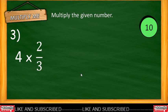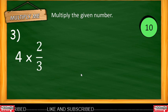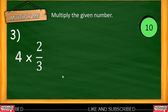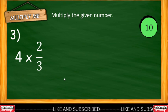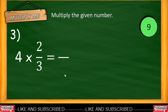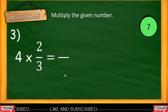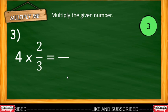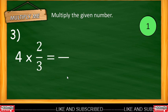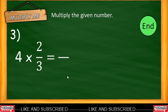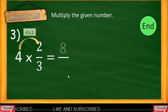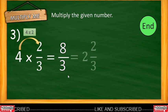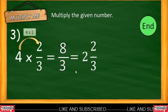Let's take example number 3: 4 multiplied by two-thirds — a whole number by a fraction. You have 10 seconds to answer. Timer starts now. Time is up. The correct answer is eight-thirds. Simplify your answer: the correct answer is 2 and two-thirds.